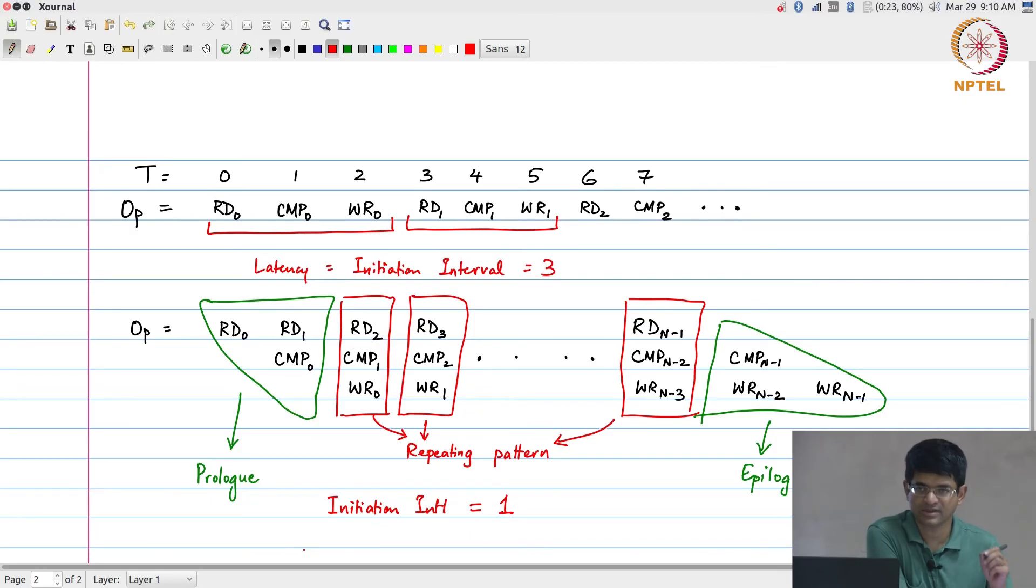Latency is still 3 because after I give an input, it still takes 3 clock cycles before write 0 happens. The latency has not changed at all - it cannot change fundamentally because of the nature of what needs to be done. But the initiation interval has come down from 3 to 1 because the compute unit and the write unit are working with different pieces of hardware and could potentially be used together.